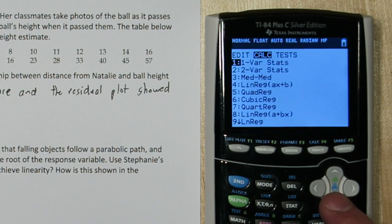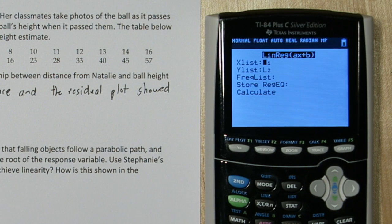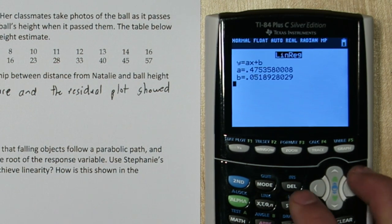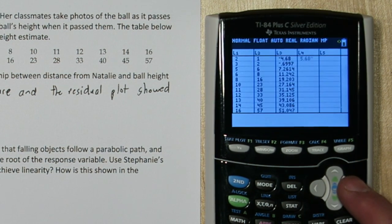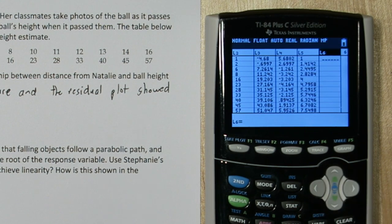So if I press stat and I calculate the least squares regression equation on the transformed data. Okay, here's my new regression equation. I'm going to go back to my list, and in list 6, I'm going to calculate my expected heights with the new model.